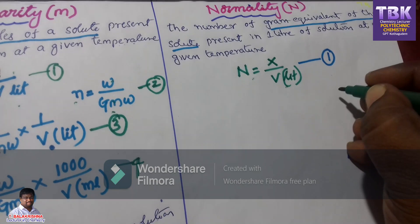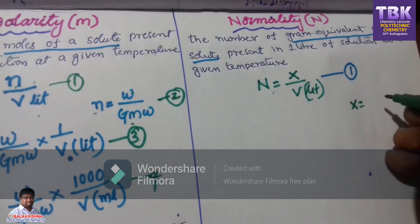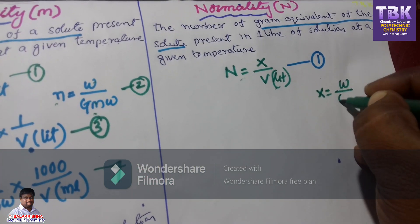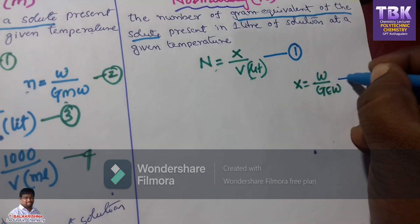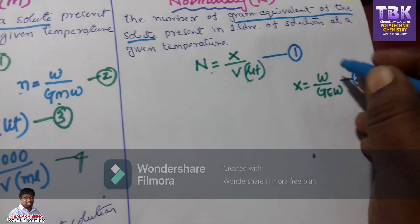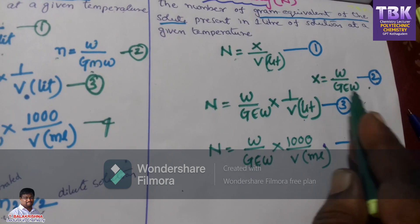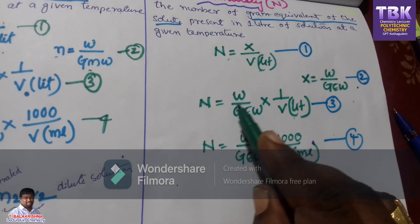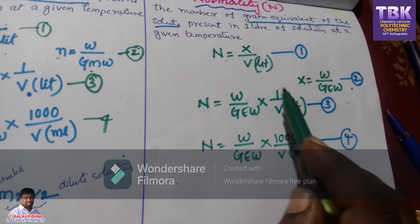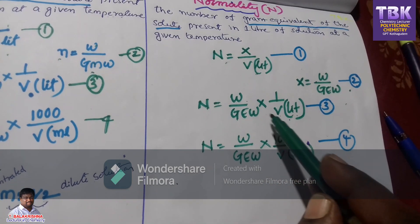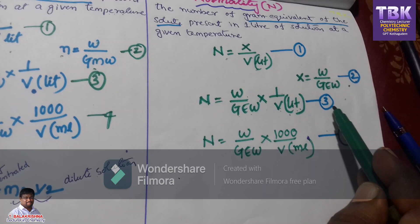In this equation, the number of gram equivalents X equals weight by gram equivalent weight (gew) — this is the second equation. I am substituting the second equation into the first equation. So N equals W by gew, multiplied by 1 by V in liters. This is the third equation for normality.